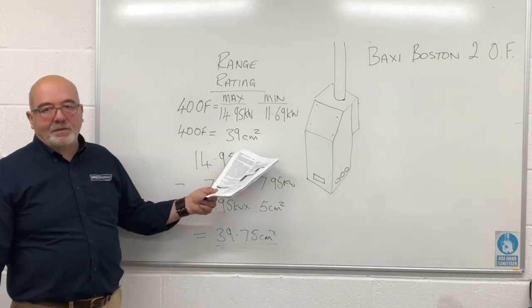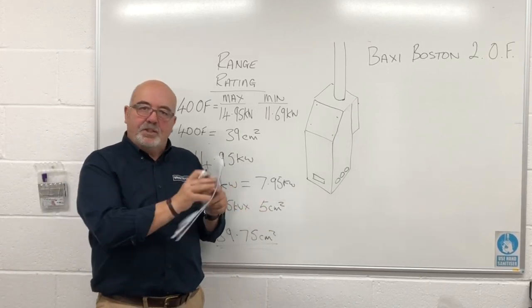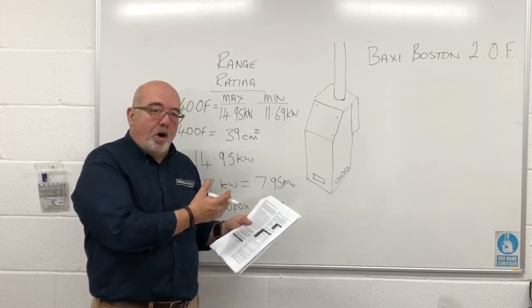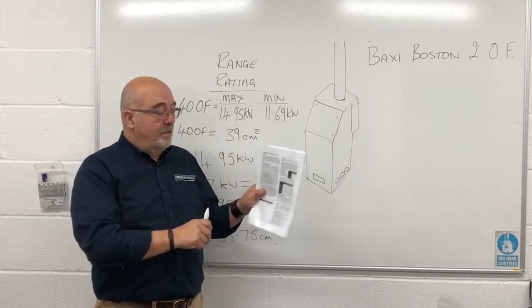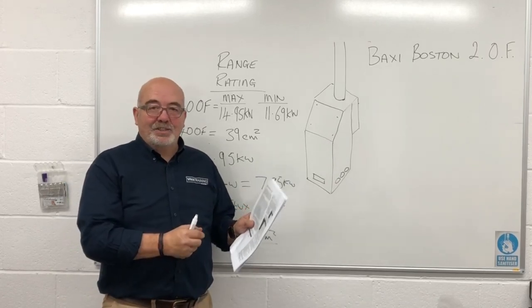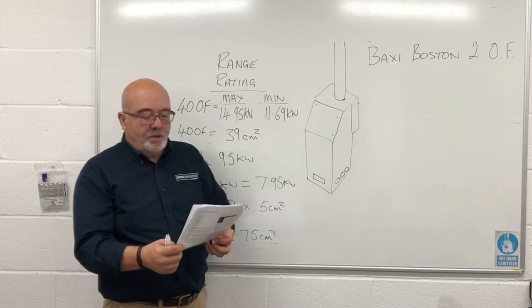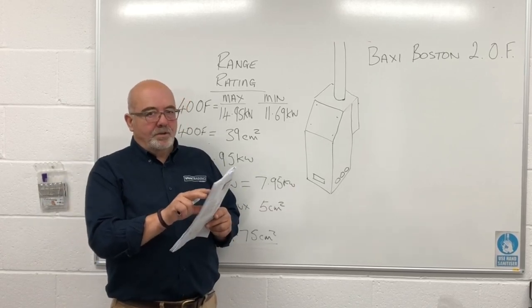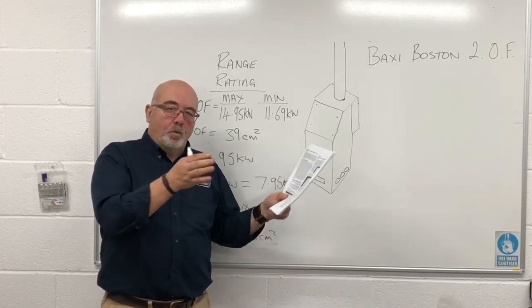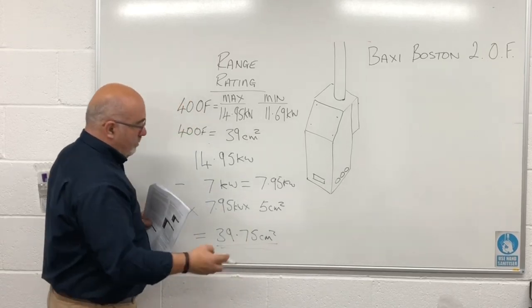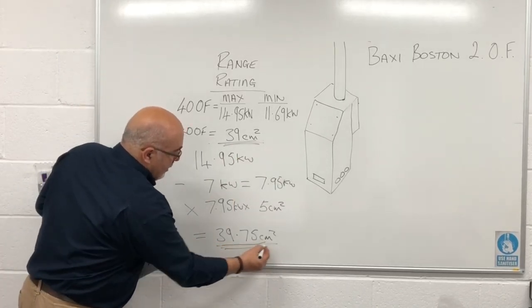So: 7.95 kW multiplied by 5 cm² per kW gives us 39.75 cm² — and the manufacturer's instructions state 39 cm². That proves the point. When you're on a job looking at ventilation and you've got something that tells you what it should be, just get your phone out and calculate it — input minus 7 kW, multiplied by 5. You should come out approximately to the answer in the book.